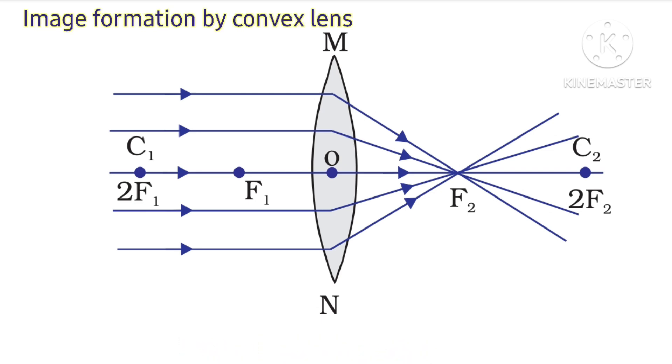When an object is at infinity, the rays coming from infinity are parallel to the principal axis.